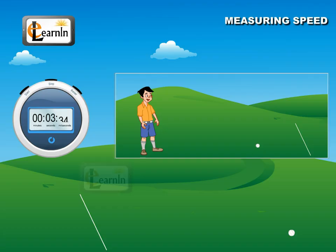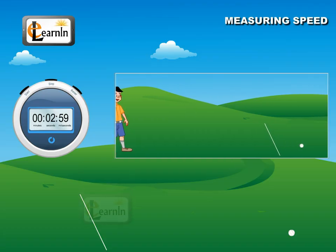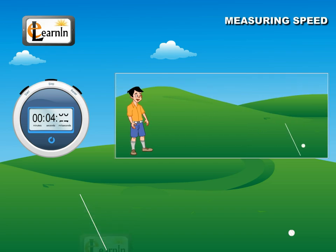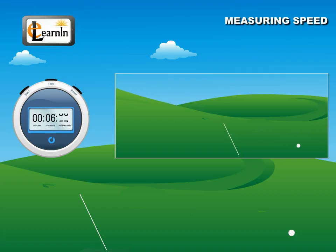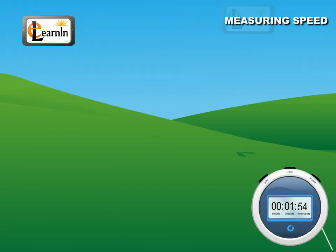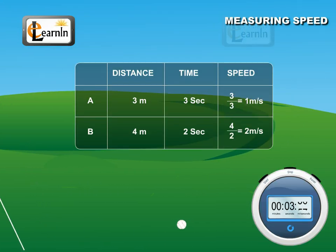Record the time at the moment when the ball touches the line and also when it comes to rest. The distance between the point where the ball crossed the line and the point where it came to rest has to be measured. Let different people repeat the same activity and record all the measurements. Calculate the speed in each case.